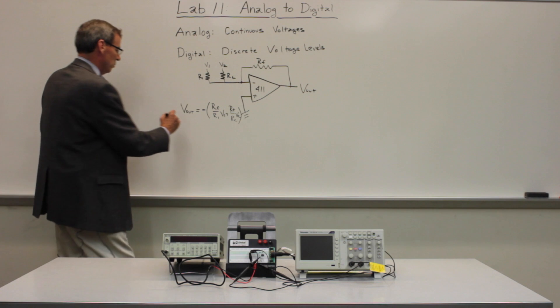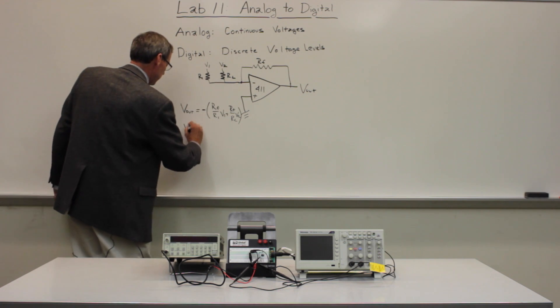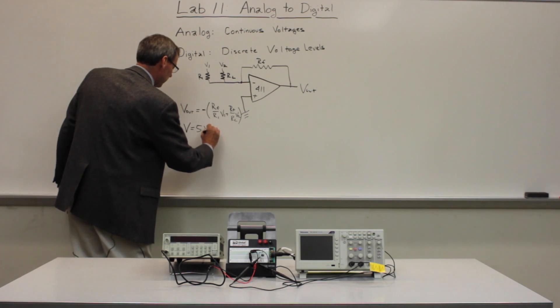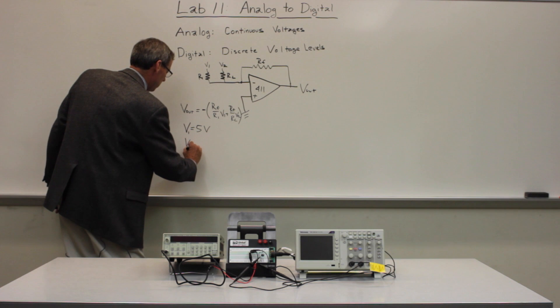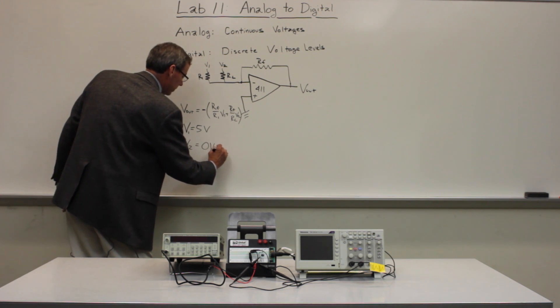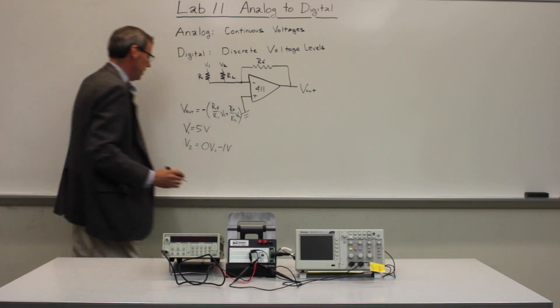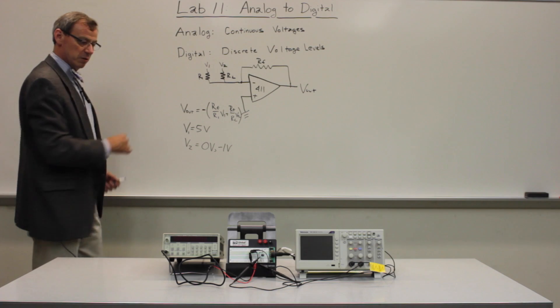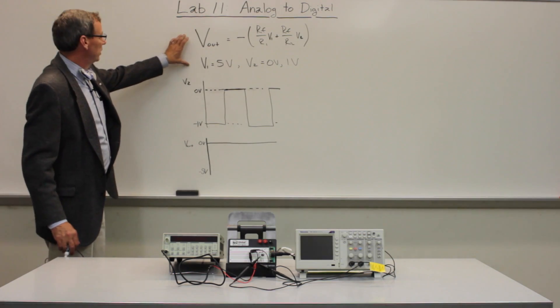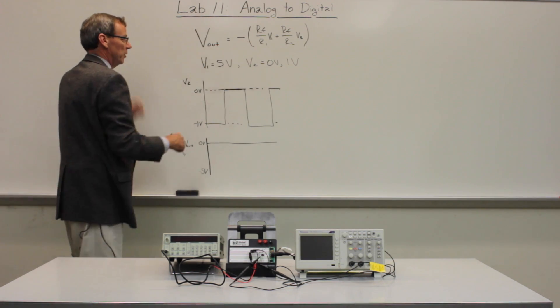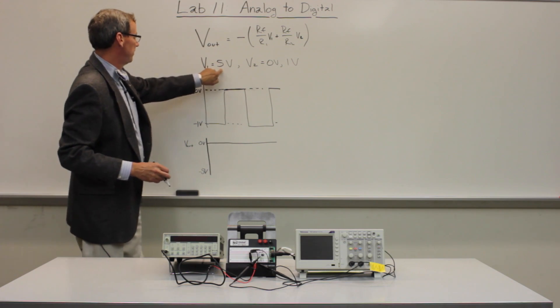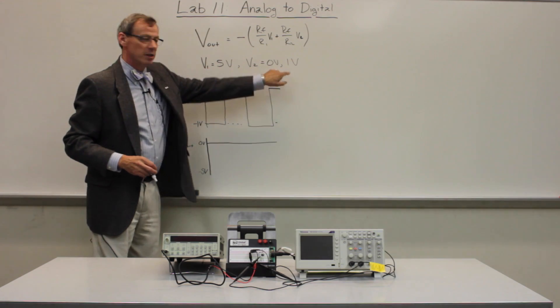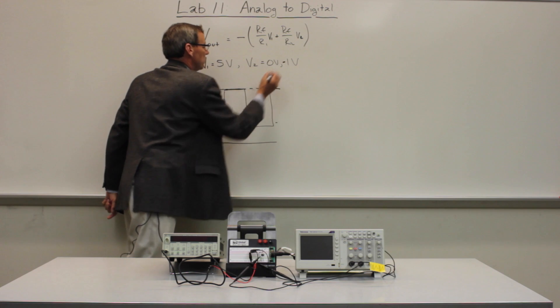We're going to be doing something a little bit different. We're going to be setting V1 equal to 5 volts, and V2 is going to be either 0 volts or minus 1 volt. And we're going to do that with a square wave here. So let's take a look at those waves for a second here. Input voltage V1 is fixed to 5 volts. V2 is either 0 or minus 1 volt.